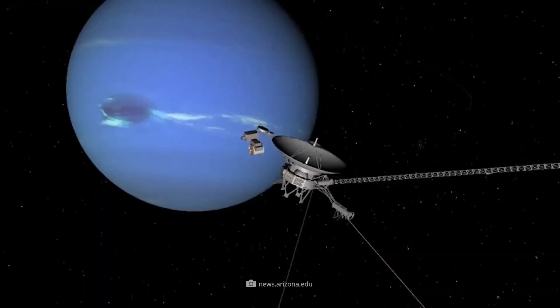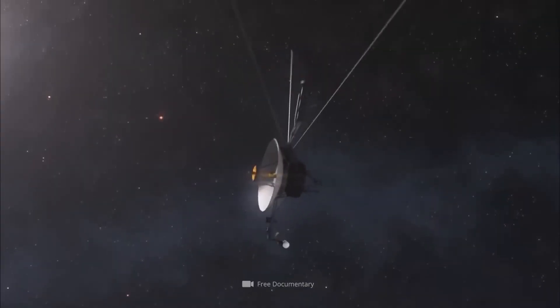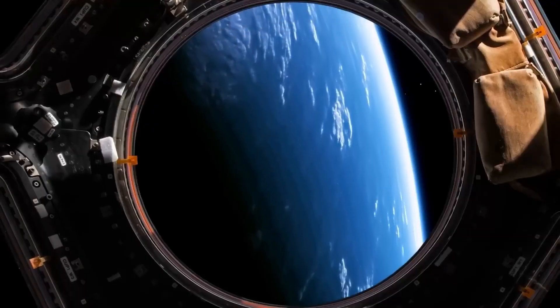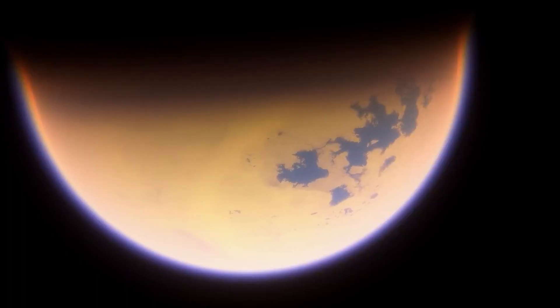As the Voyager probes moved past this barrier, scientists also anticipated changes in the local magnetic field, since the interstellar magnetic field, shaped by the influence of nearby stars, was thought to be oriented quite differently from the solar magnetic field inside the heliosphere.